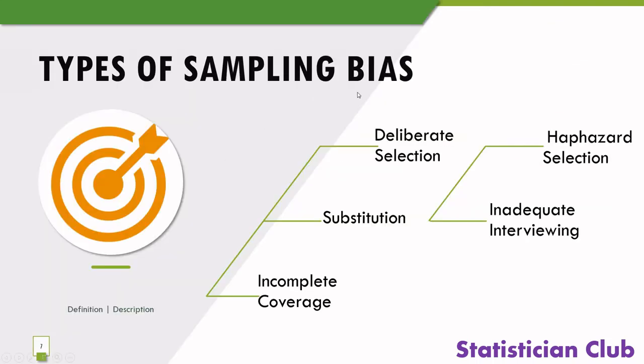Types of sampling bias: deliberate selection, substitution, incomplete coverage, haphazard selection, and inadequate interviewing.